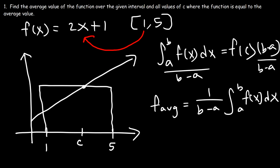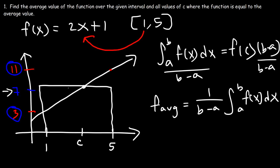If we plug in 1, f of 1 is 2 times 1 plus 1, which is 3. And f of 5 is 2 times 5 plus 1, which is 11. Averaging those, 3 plus 11 is 14 divided by 2, giving 7. For a linear function, the average value of the function will equal the average y value in the interval a to b, so we should expect 7 as our answer. The average x value, averaging 1 and 5, gives 3, so for a linear function c equals 3.